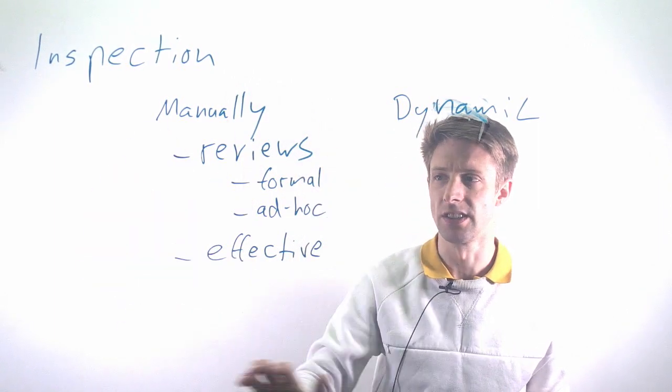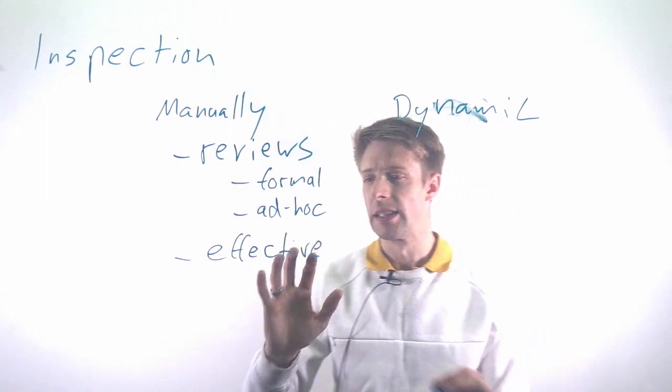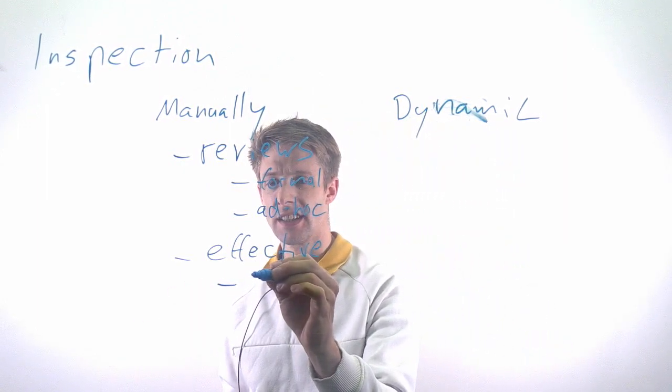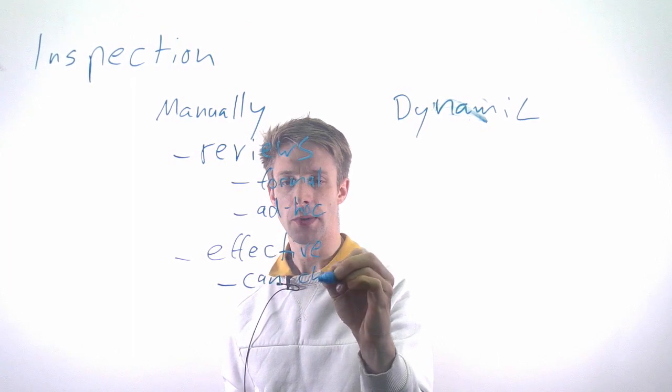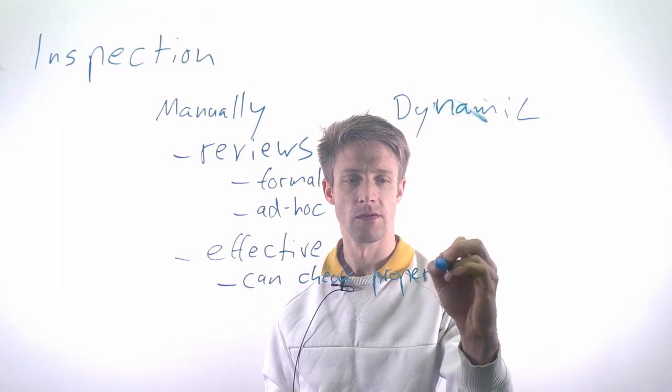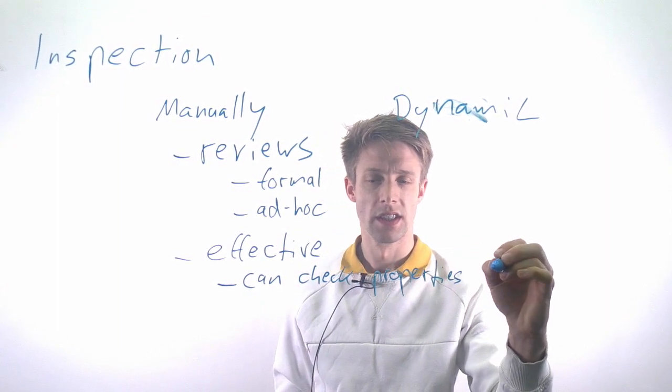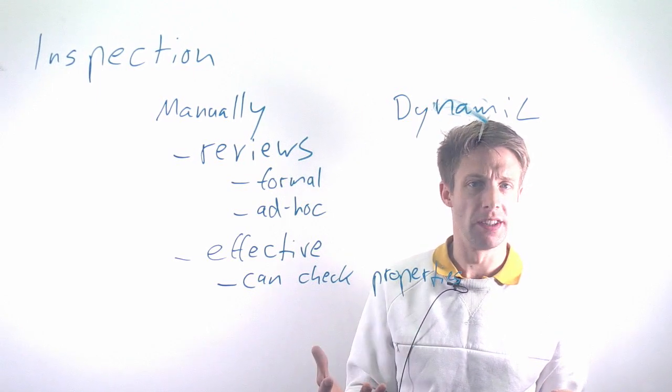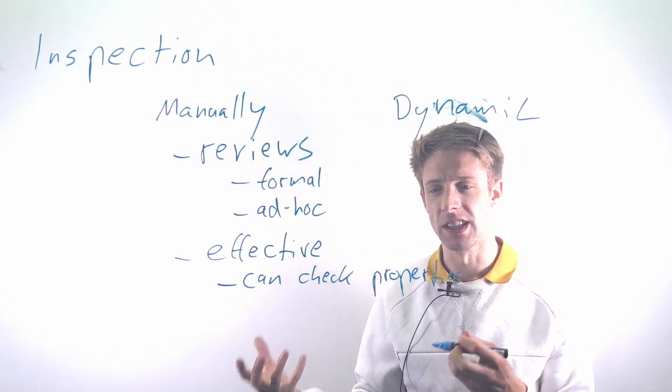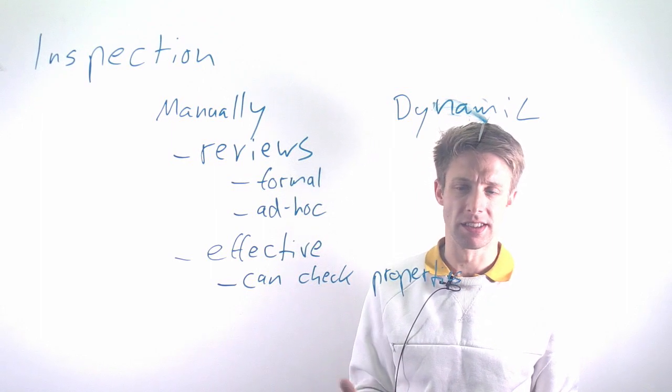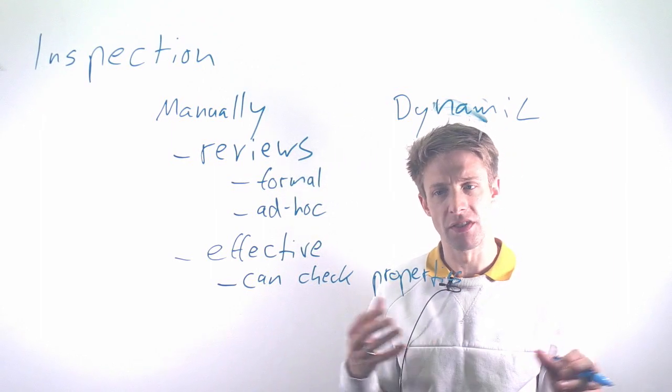The reasoning why this is so good is that you can check properties that you otherwise could not. For example, code readability or how well-commented the code is—that's nothing you can do with an automated test. Even if you can execute the system,